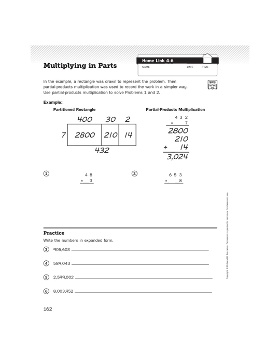Let's read the instructions. It says: in the example, a rectangle was drawn to represent the problem. Then, partial products multiplication was used to record the work in a simpler way. You use partial products multiplication to solve problems 1 and 2.